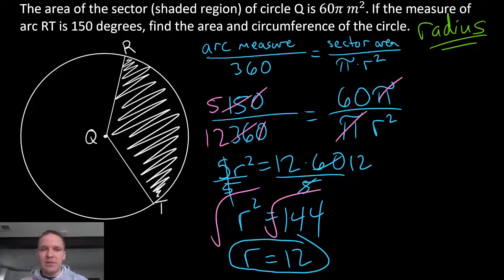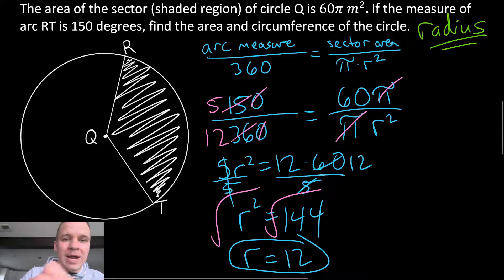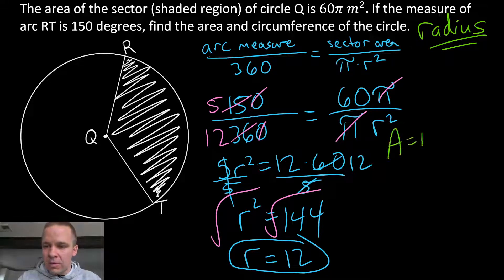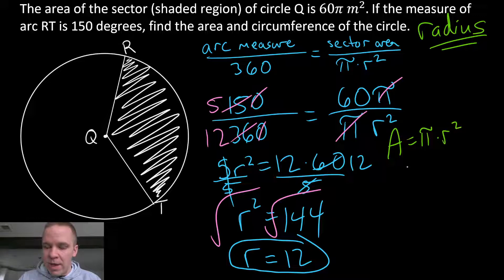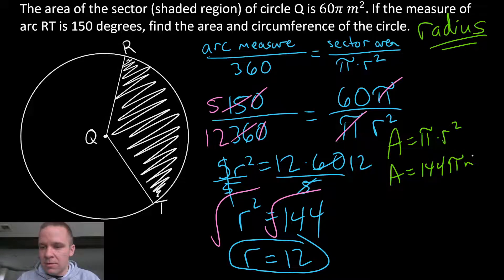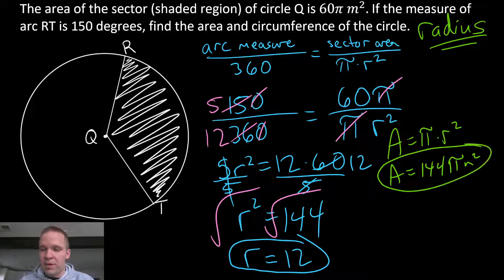I want my area and circumference. So if I want my area, my area equals π times my radius squared, so the area is gonna be, well, 12 squared is gonna be 144, so I'll get 144π, and this is meters squared for area. So there's my area.